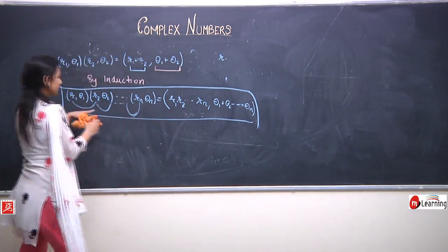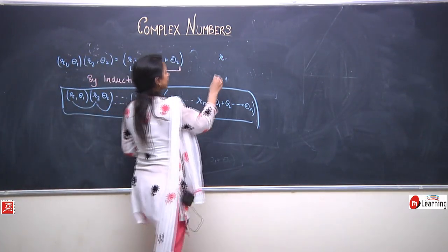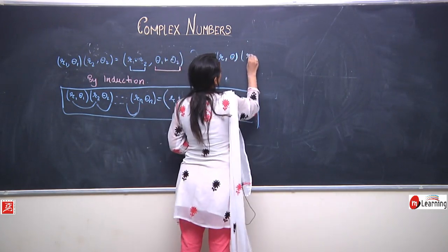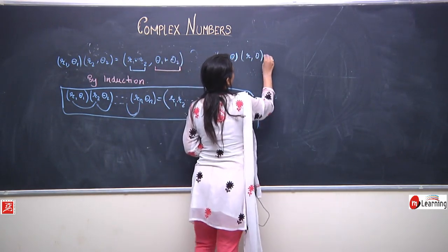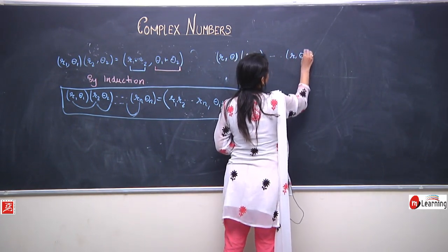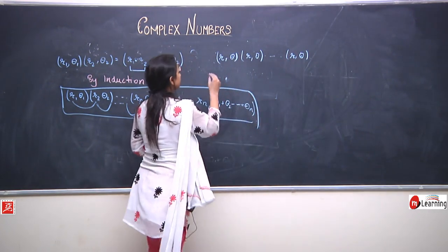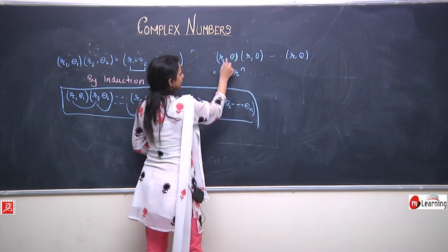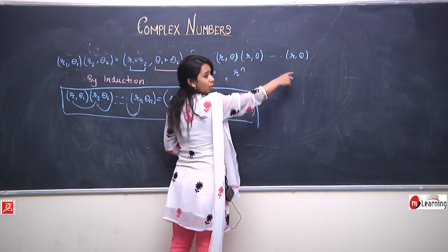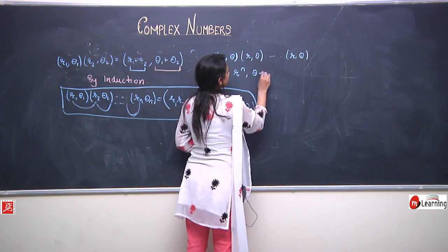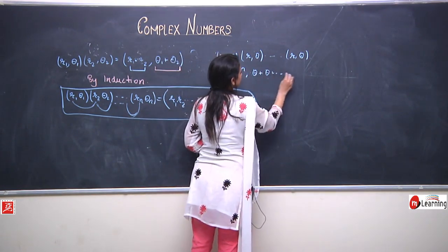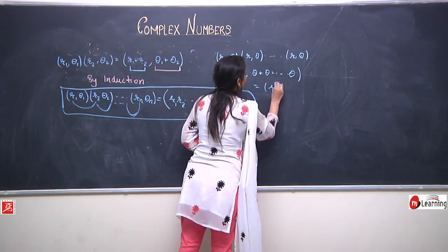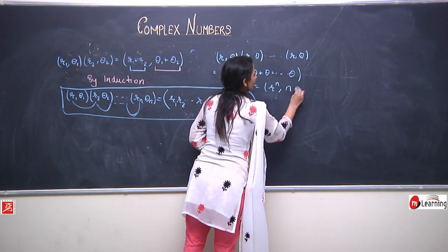A very special case of this result is when all the factors are equal. We can say that (r, theta) times (r, theta) repeated n times equals r to the power n comma n theta. That is, we multiply all the amplitudes to get r^n, and add all the arguments to get n theta.